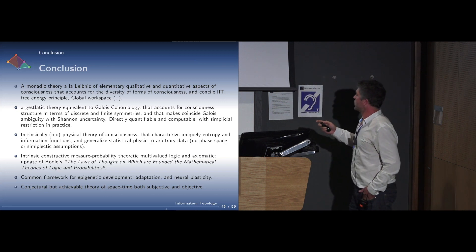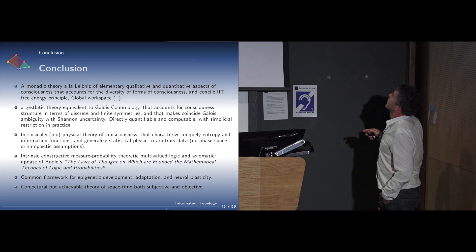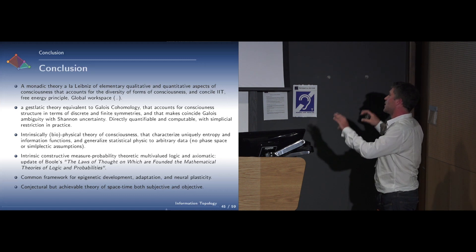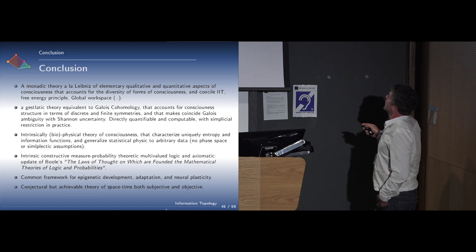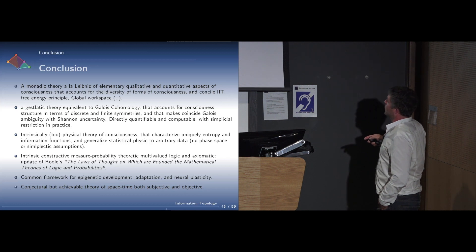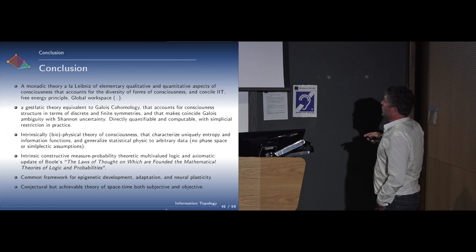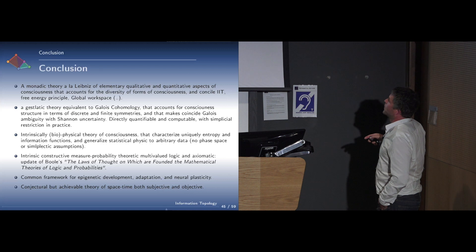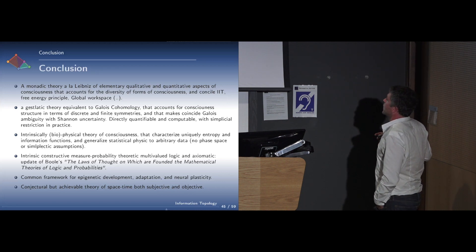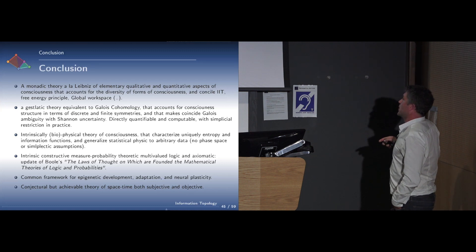In conclusion, we had a monadic theory à la Leibniz of elementary quantitative and qualitative aspects of consciousness that accounts for diversity of forms of consciousness, the diversity being the different facets of the simplex, the different minima. It reconciles integrated information theory, free energy principle, and probably global workspace. We find a gestaltic theory equivalent to Galois cohomology that accounts for consciousness structure in terms of discrete and finite symmetries. This is the quite new stuff, which is maybe important. It makes coincide Galois ambiguity group, permutation groups, the ambiguity of permutation with Shannon uncertainty. It's directly quantifiable and computable with simplicial restrictions in practice. This is a biophysical theory of consciousness.